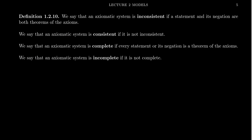To finish up lecture two, I want to add a bit more vocabulary about axiomatic systems. We say that an axiomatic system is inconsistent if a statement and its negation are both theorems of the axioms. We say it is consistent if it's not inconsistent. In an inconsistent system, all statements are actually both true and false simultaneously.